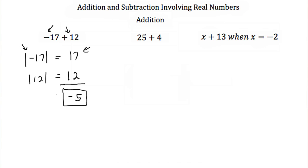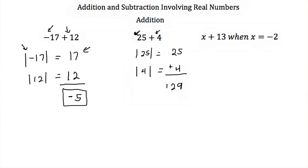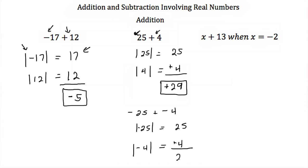Here we have two positive numbers: positive 25 and positive 4. So we add their absolute values: the absolute value of 25 is 25 and the absolute value of 4 is 4, giving us 29. Both numbers come from positive values, so this is positive 29. If it had been negative 25 plus negative 4, we would still add their absolute values, but the result would be negative 29 because both numbers are negative.